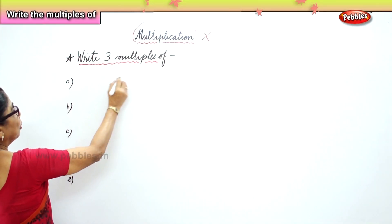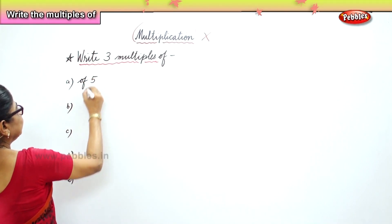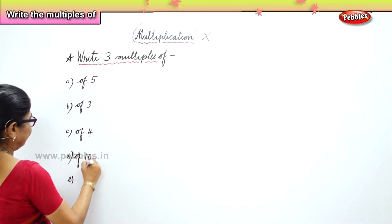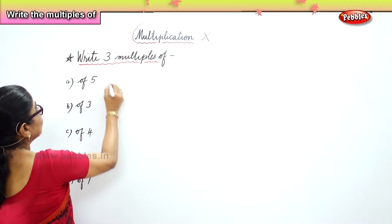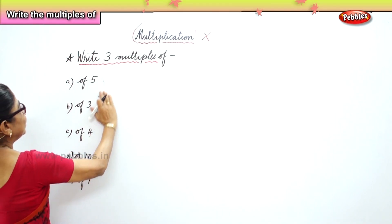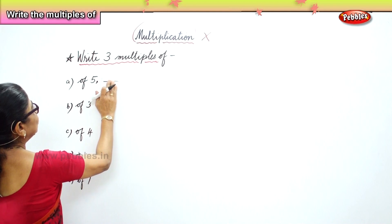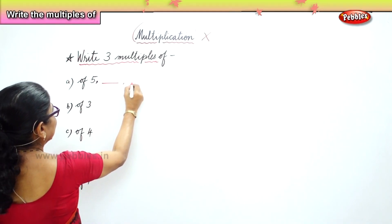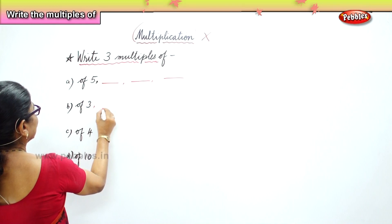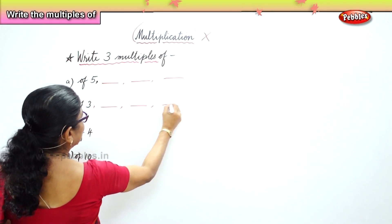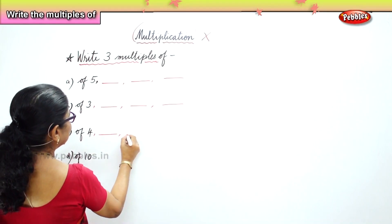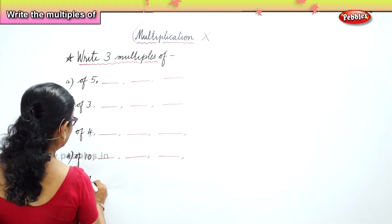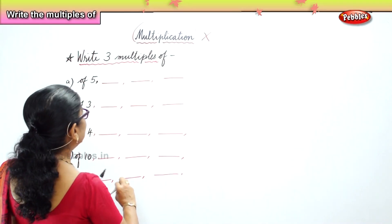Multiples of five, of three, of four, of ten, of seven — you have to write down three multiples of each. Write down the multiples of five: one, two, three. Three multiples of three: one, two, three. Multiples of four: one, two, three — fill it up. Multiples of ten: one, two, three. And multiples of seven: one, two, three. For this we need to know the tables.